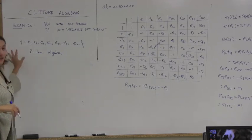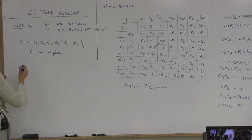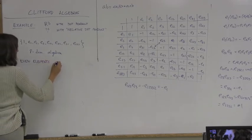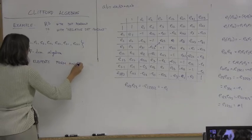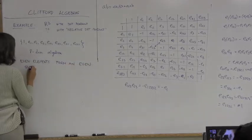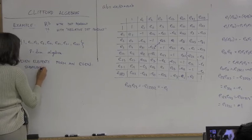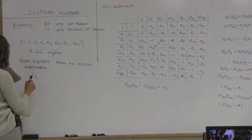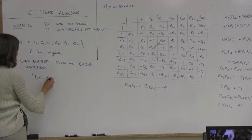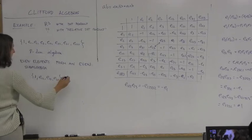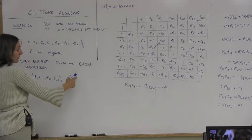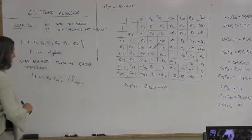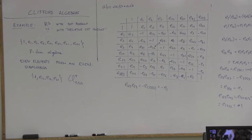Let's take five minutes to look at even subalgebras. If we take the even-grade elements — grade 0 and grade 2 — they form an even subalgebra. So from CL(0,3,0) the even subalgebra consists of: 1, E12, E23, E31.